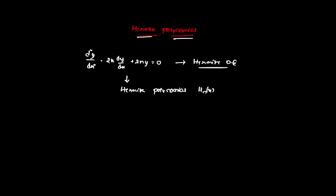The Hermite polynomial Hn(x) is given by a summation where r runs from 0 to the integral part of n/2. You substitute r = 0, then r = 1, then r = 2, and so on up to the integral part of n/2. The formula involves: minus 1 to the power of r, times n factorial divided by r factorial times (n minus 2r) factorial, times (2x) to the power of (n minus 2r).